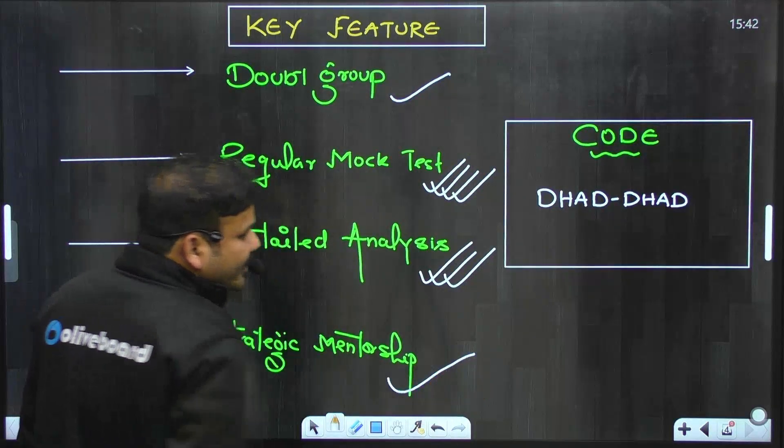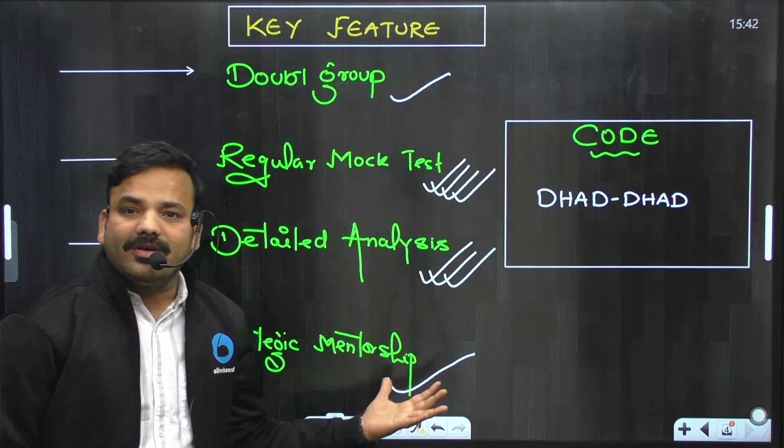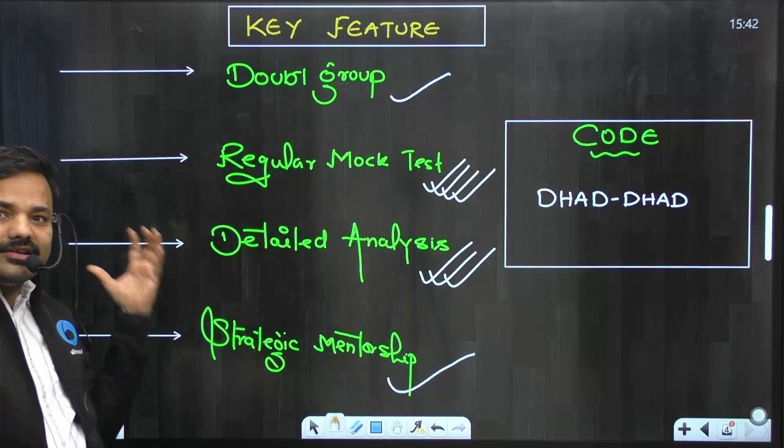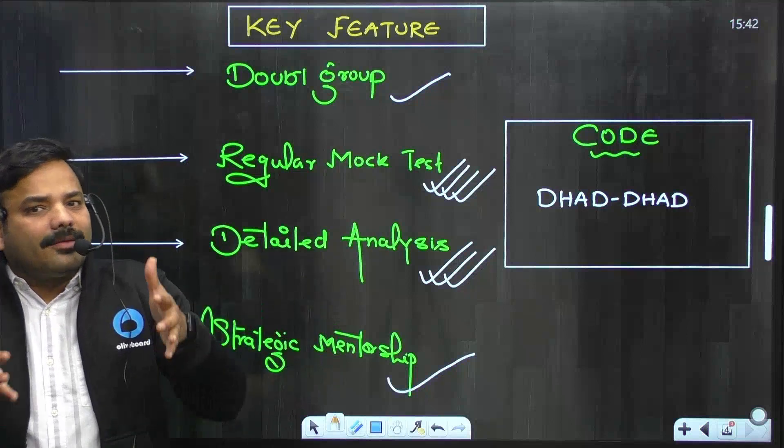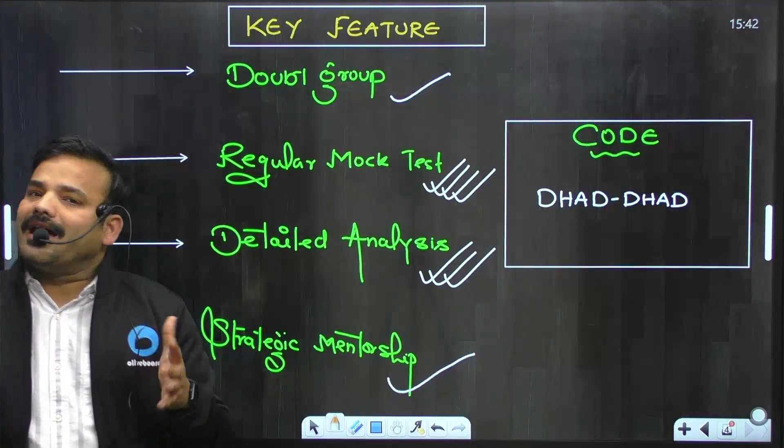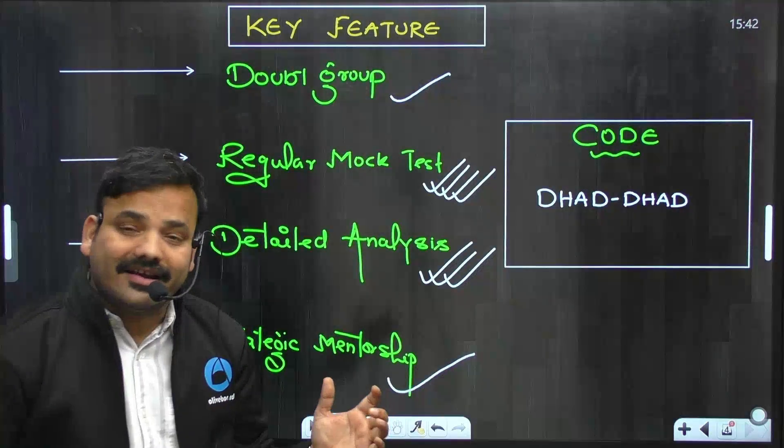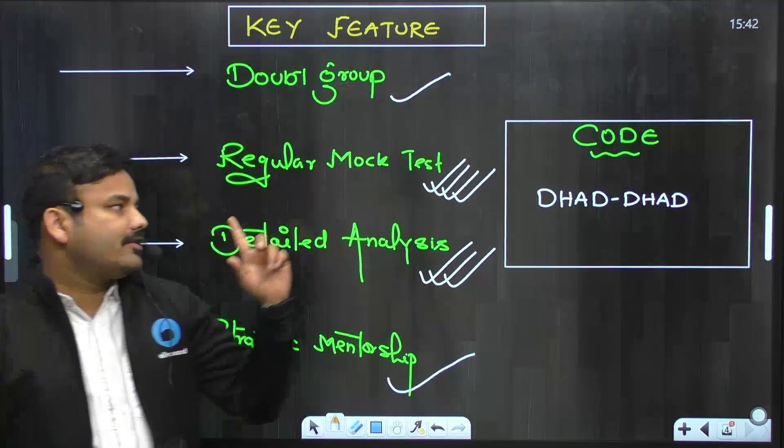Aur chauthi cheez hogi strategic mentorship. Toh isi WhatsApp group par ya phir one-to-one aapka mentorship bhi hum provide karwate hain. Agar yeh pura considering, agar yeh pura dekhu, toh accumulate hokar yeh maths strategy rahegi jismein humko main aapko is tarike se quant padha raha hunga. Aur agar aapko quant ke acchi taiyari karni hai, detail taiyari karni hai, apne pen se taiyari karni hai, aur relevant taiyari karni hai, toh yeh mera code use kar sakte ho. Mera code hai DHAD-DHAD.